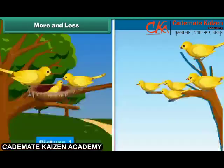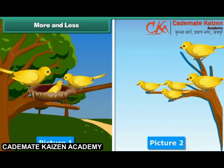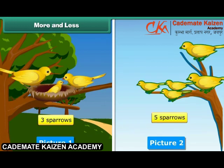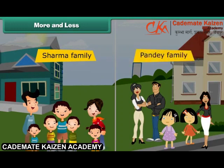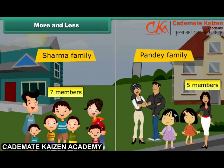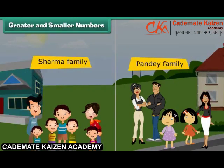More and less. Look at these two pictures — which of them has more sparrows? The first picture has 3 sparrows and the second picture has 5 sparrows. Therefore, the second picture has more sparrows than the first. Look at these two pictures: on the left is the Sharma family and on the right is the Pandey family. Which family has more members? Sharma family has 7 members and Pandey family has 5 members. Therefore, Sharma family has more members.